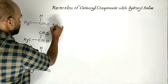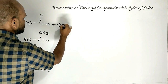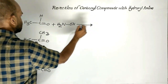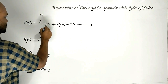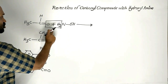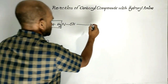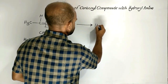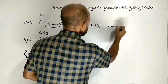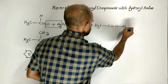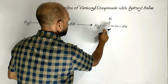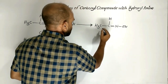When acetaldehyde is treated with hydroxylamine, water gets removed and a product with a carbon-nitrogen double bond is obtained. This product is ethanal oxime.